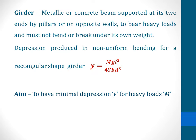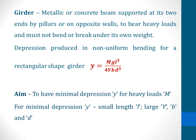Our girder should be able to bear heavy loads and undergo minimal or no depression at all. For this to occur, looking at the expression for the depression, we need to have a small length l, while the Young's modulus, breadth, and thickness must be quite large.